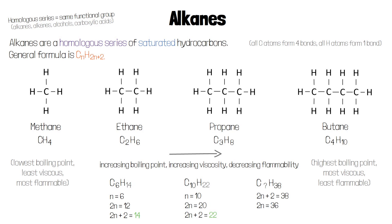If 2N is 36, then N must be 18. That means an alkane with 38 hydrogen atoms will have 18 carbon atoms, so its formula will be C18H38.